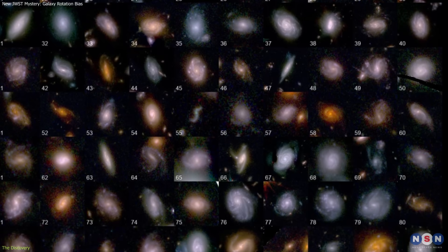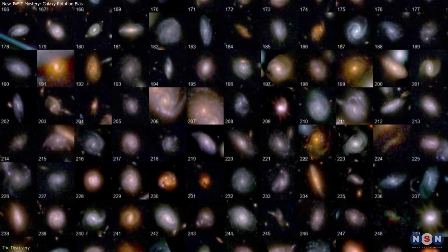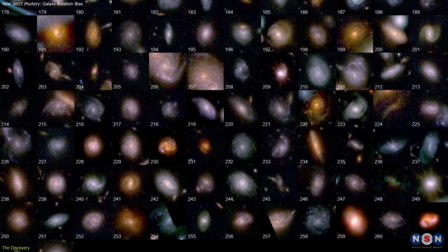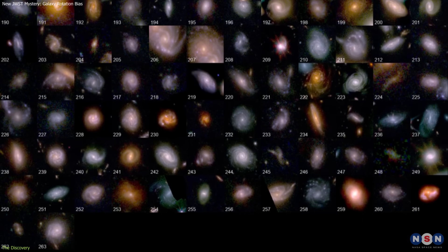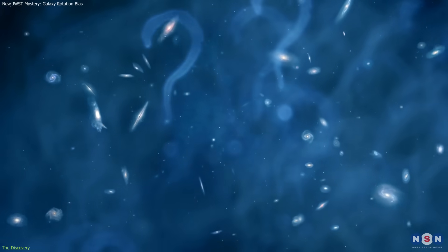Using its sharp infrared images, a research team from Kansas State University studied a sample of 263 galaxies from that early era. The question they asked was whether these galaxies showed any preference in their direction of rotation.